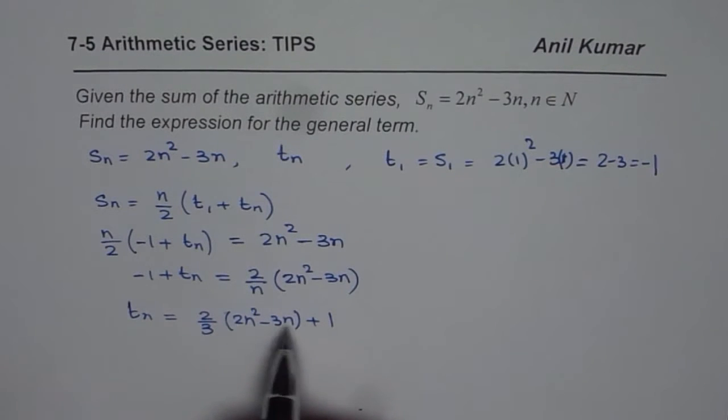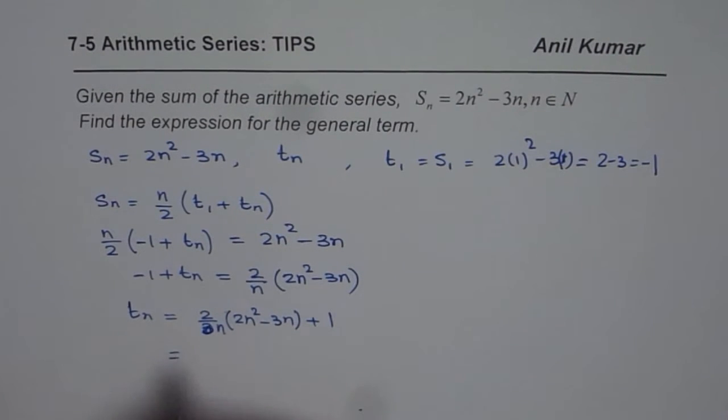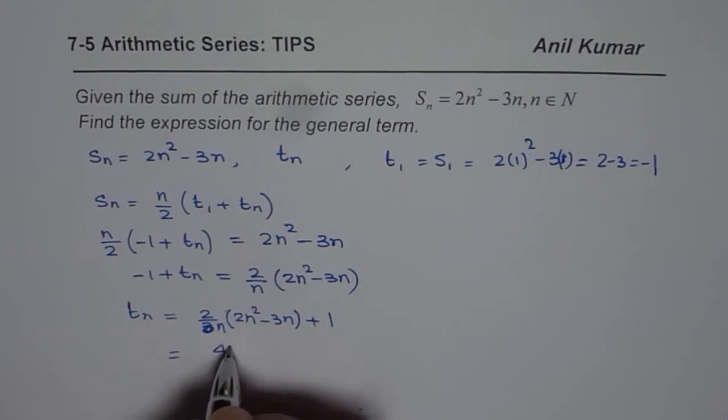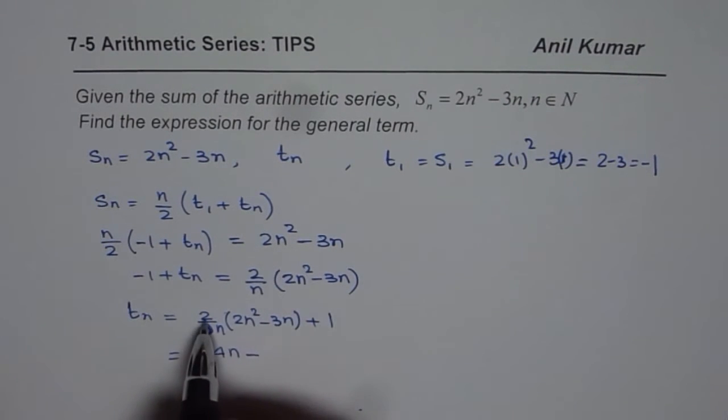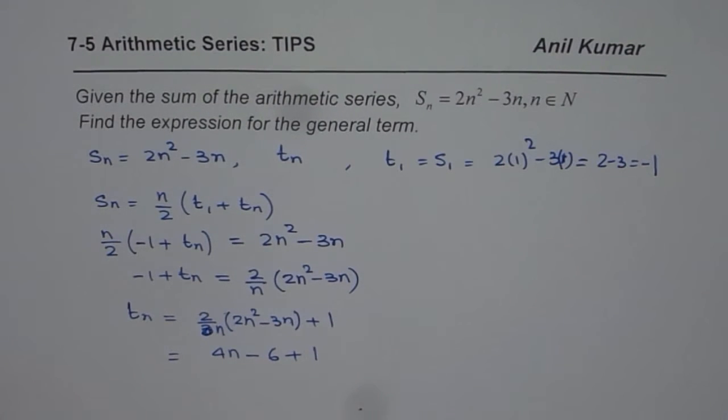Let's open this bracket and simplify. It's 2 over n. When I open this bracket multiplying the first term by 2 over n, 2 times 2 is 4, n² divided by n is n, so we get 4n minus 2 times 3 is 6, n divided by n is 1, and then we have plus 1. So this gives us t_n as equal to 4n minus 5. So we get our answer: t_n equals 4n minus 5.